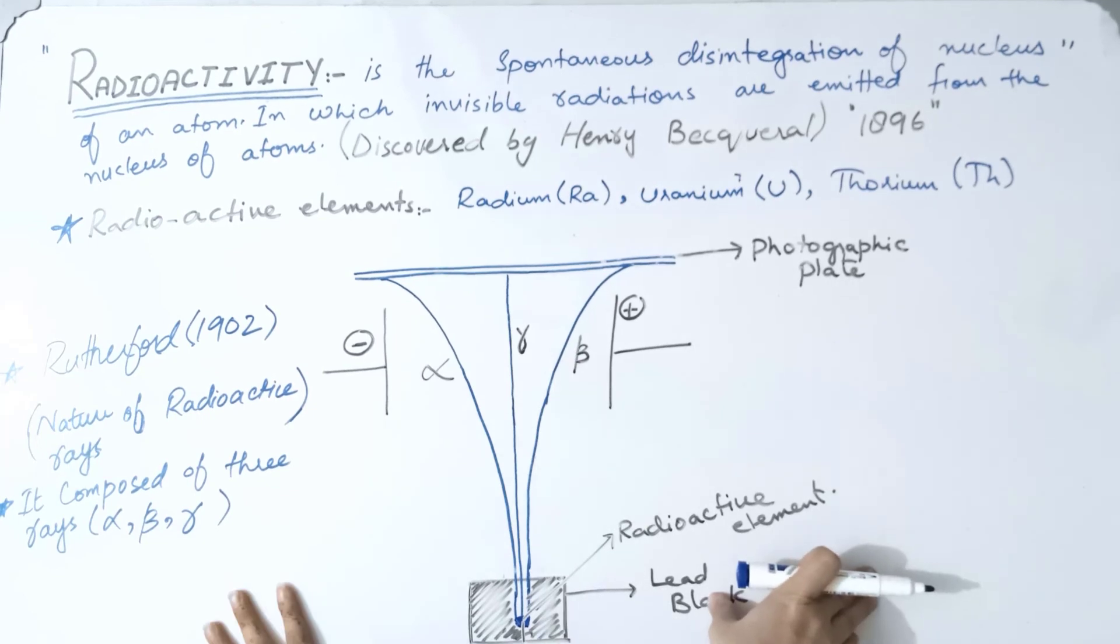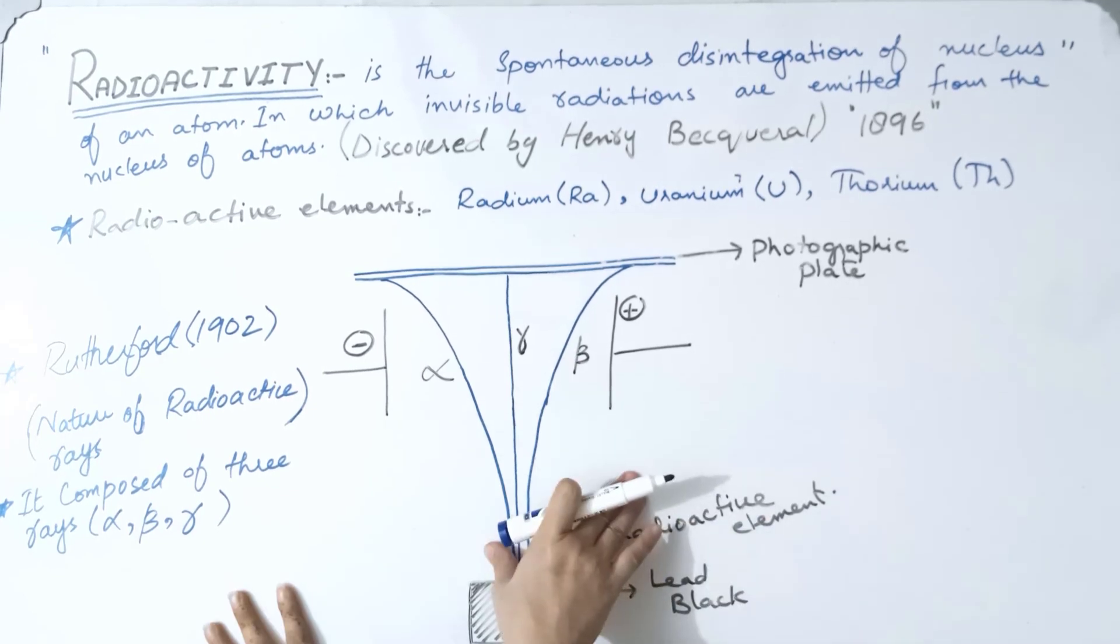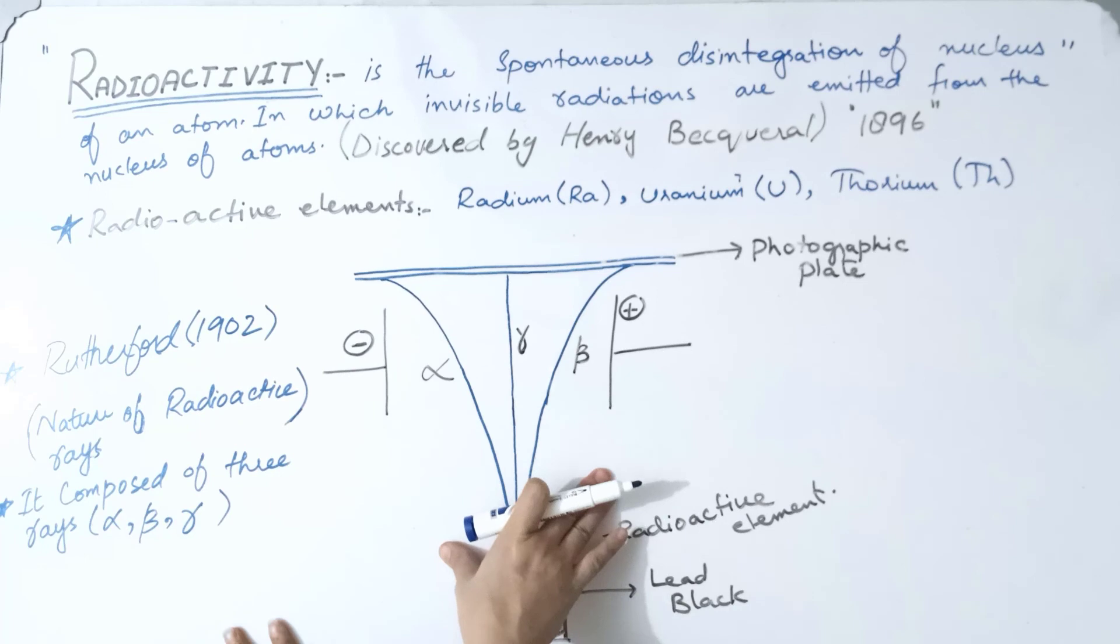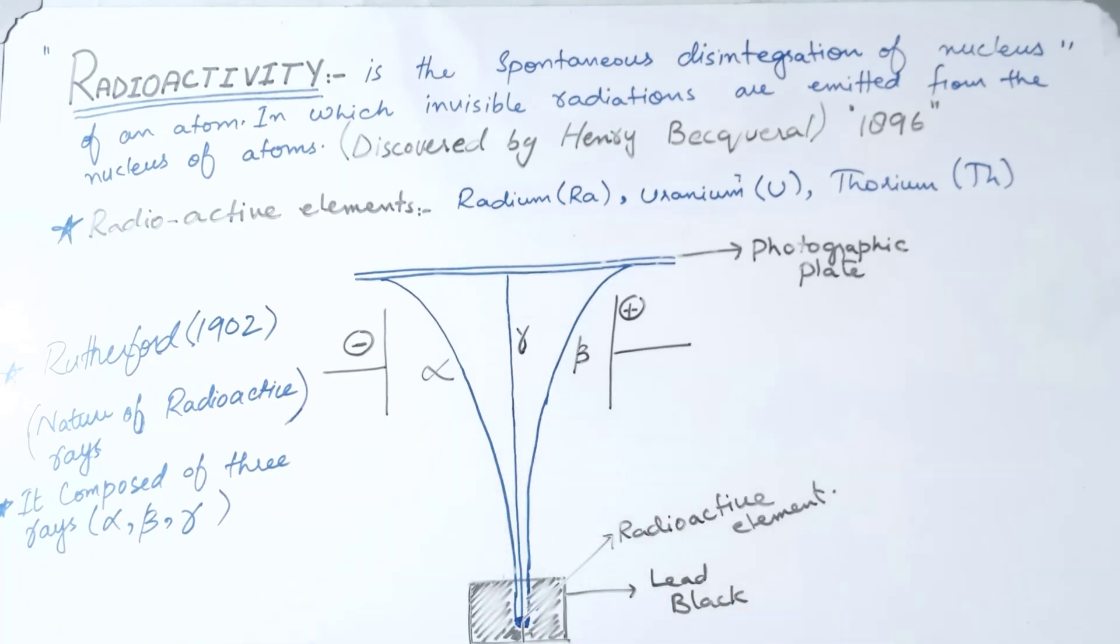Through this experiment, Rutherford showed us the nature of radioactive rays. They are composed of three rays: alpha, beta, and gamma.